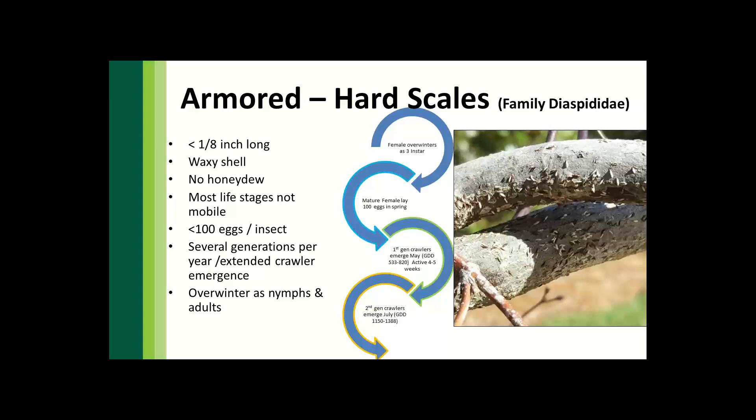Inversely to soft scales, armored scales don't produce nearly as many eggs per insect, but they balance that out by having oftentimes several generations per year or extended crawler emergence. They can overwinter as nymphs and adults, so with armored scales you may get some portion of the population with a dormant oil but not others — it's a more complicated life cycle. You can also have generations overlapping, so it takes patience and understanding of how management works.